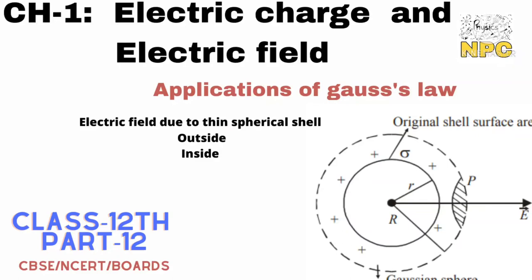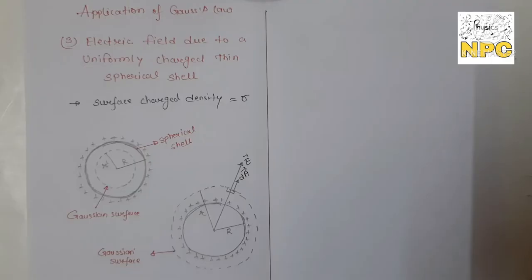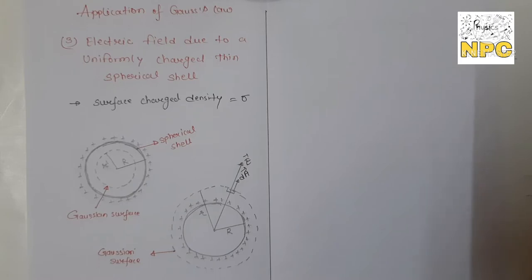Hello everyone, I am Tripti, welcome to NPC. Today we are going to deal with the third application of Gauss's law, and that is the electric field due to a uniformly charged thin spherical shell. In the last video we learned to find the electric field through a plane sheet. Now in this video we will cover the spherical shell.